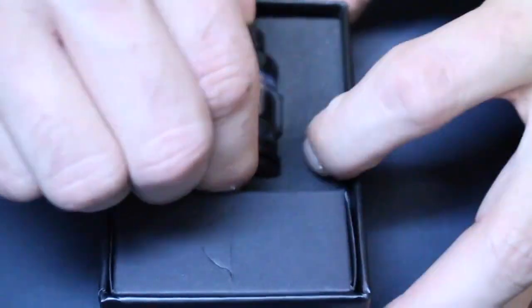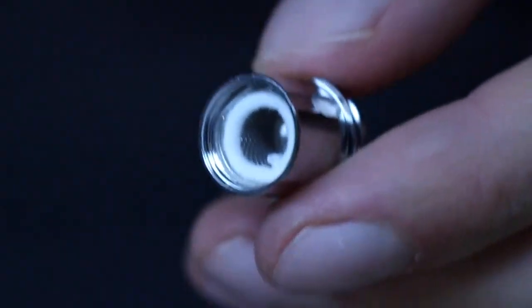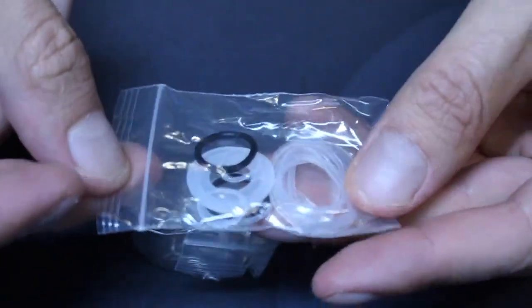In the box you'll get the Cerberus tank with bubble glass pre-installed, a spare 4ml straight glass tank, two super mesh X1 coils with one pre-installed, a user manual, and spare parts.